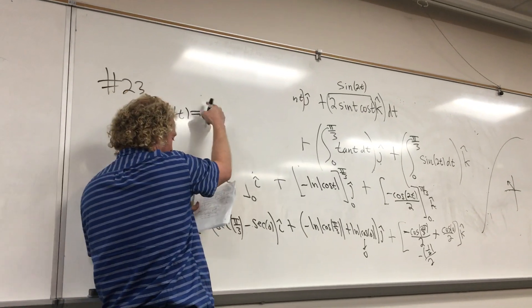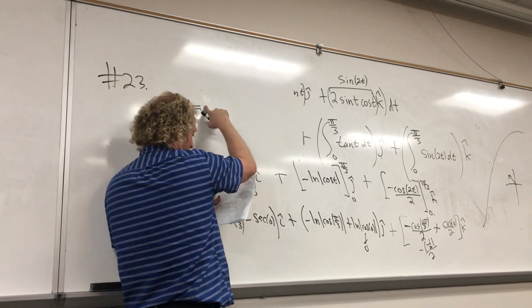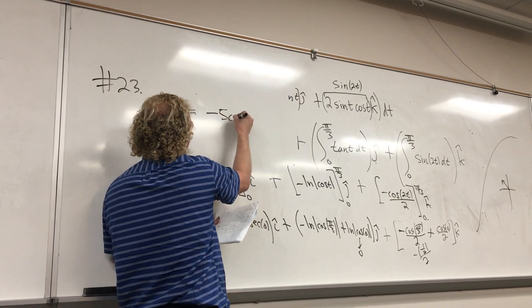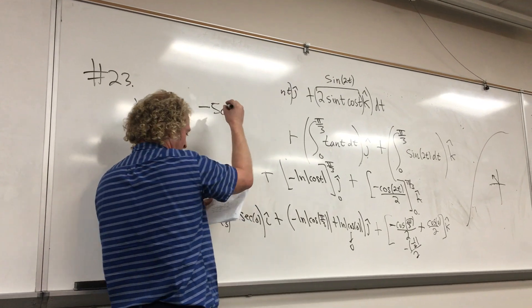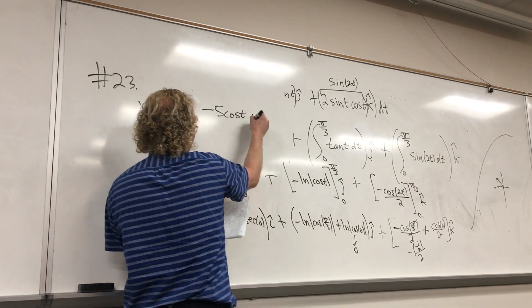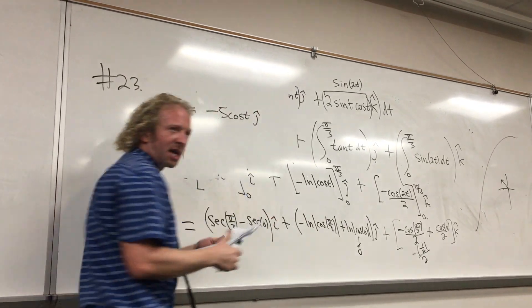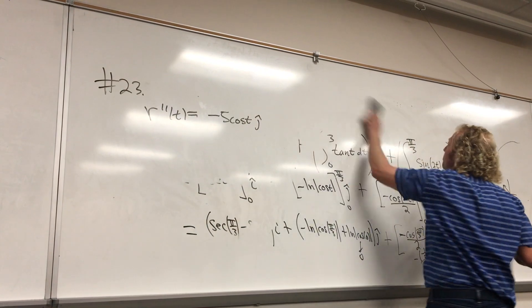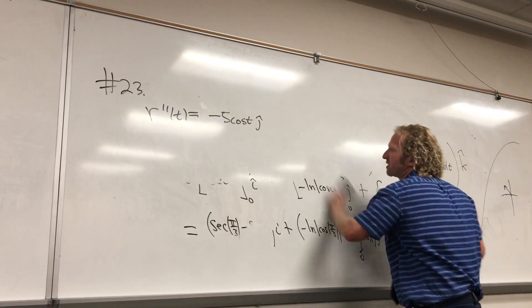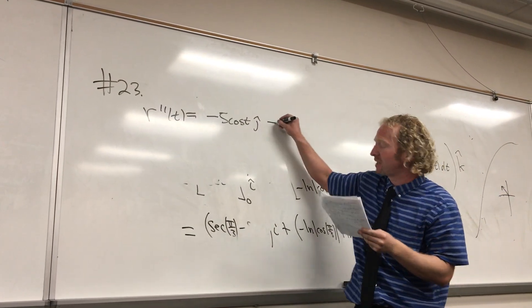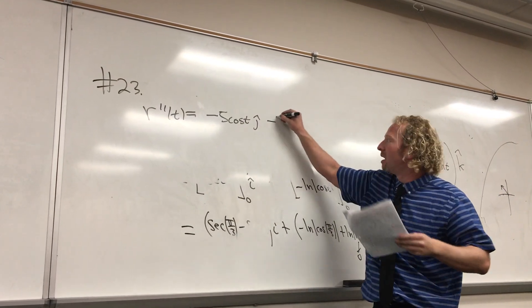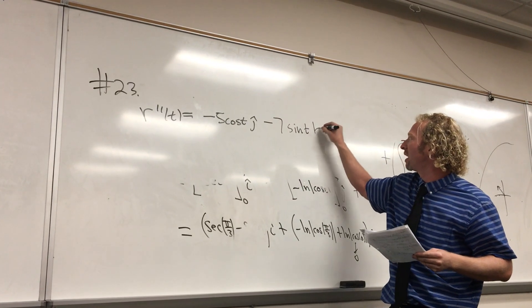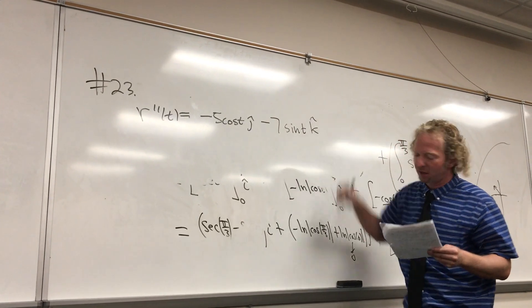Second derivative — okay, a second derivative — and it's negative 5 cosine t, negative 5 j hat. And minus 7 sine t, k hat.